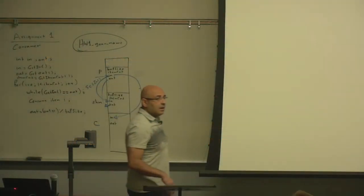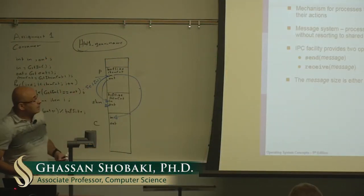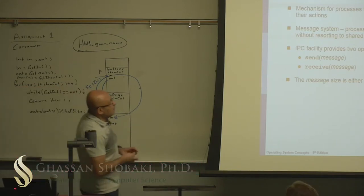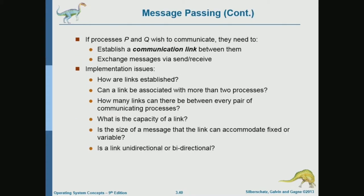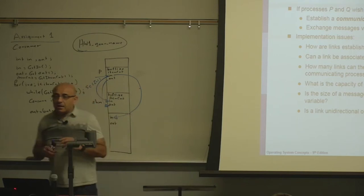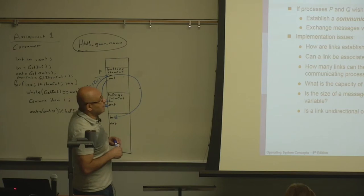We will go through the interprocess communication methods that we will not be implementing in an assignment. Message passing is another interprocess communication method implemented by the system, where two processes communicate through the system by using system calls or APIs like send and receive.